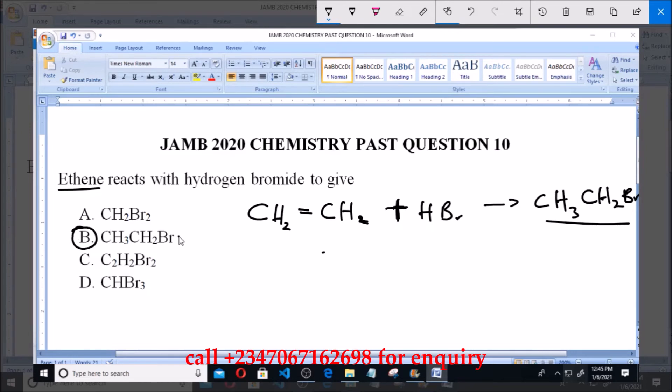So the reaction of ethene with hydrogen bromide will give us 1-bromoethane which is option B. It is an addition reaction to make ethene saturated.